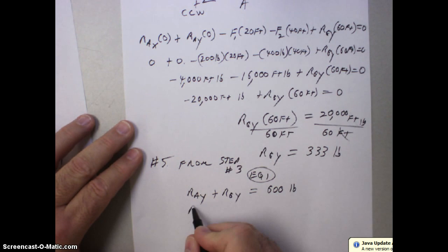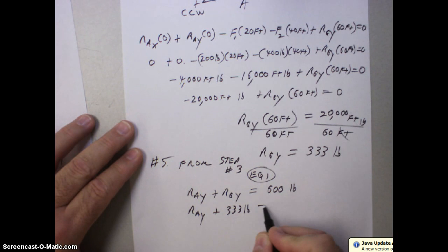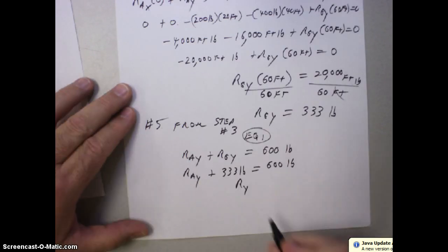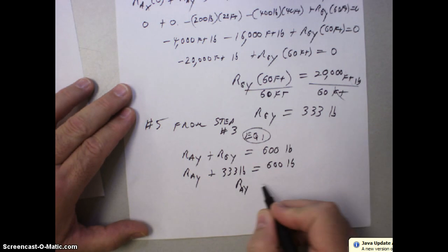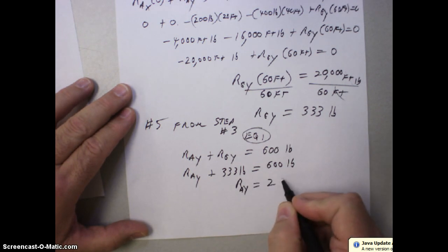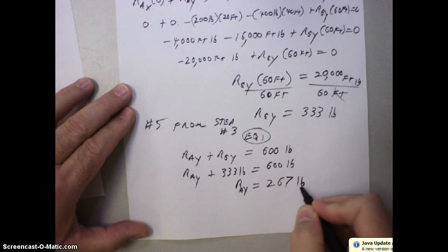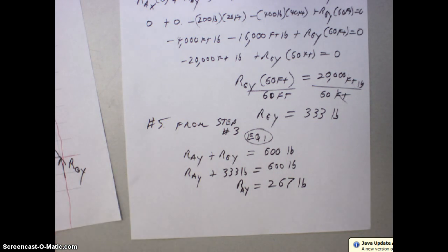RAY plus the 333 pounds equals the 600 pounds. So RAY equals 267 pounds. So now we have our third and final answer.